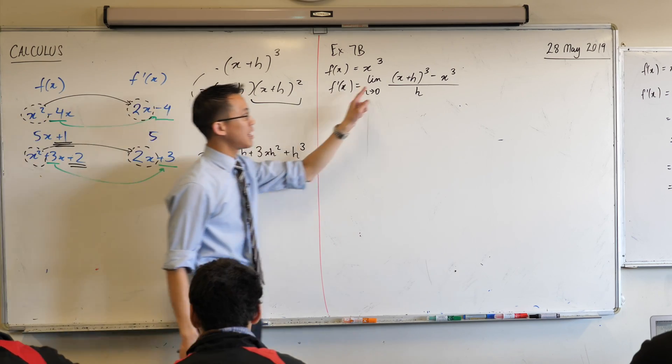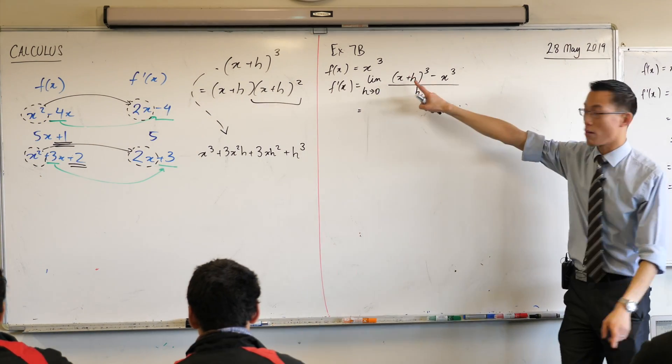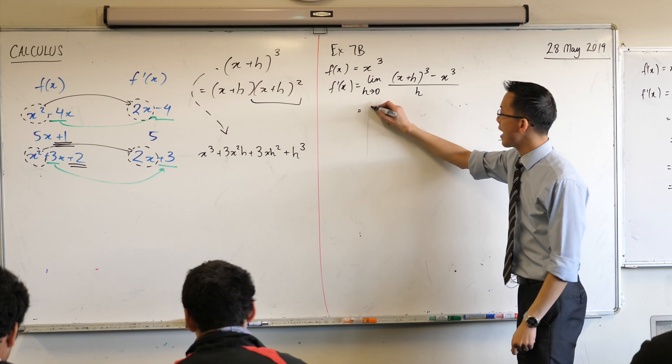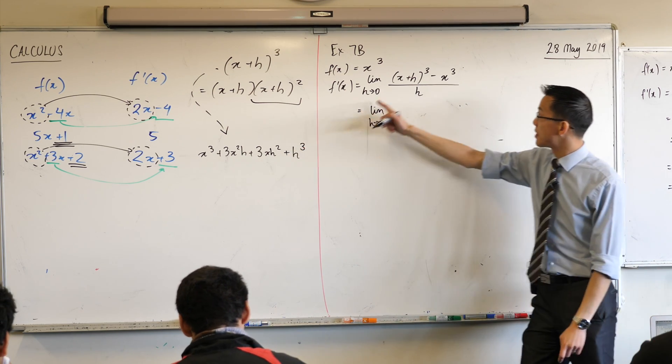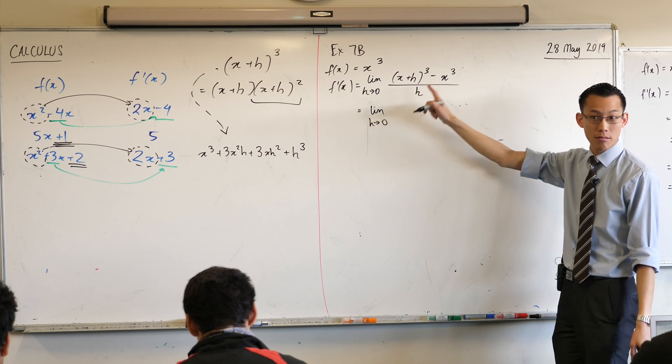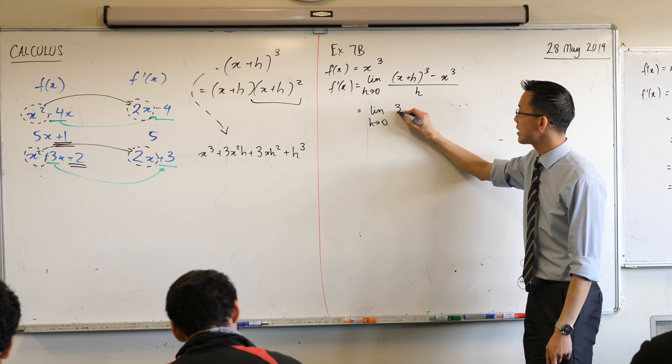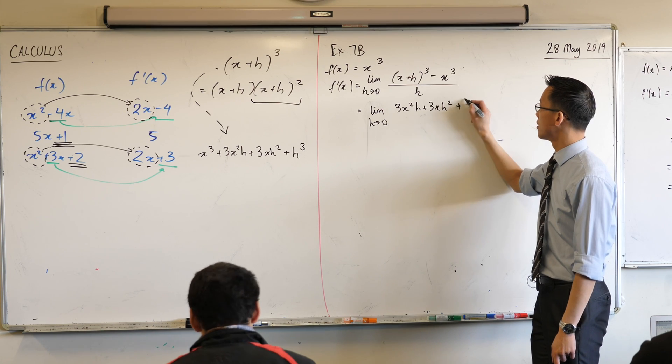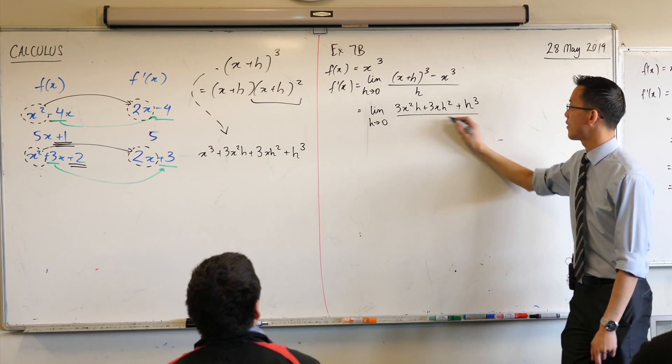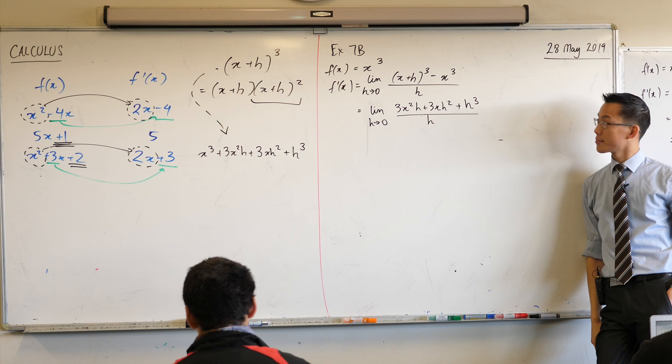So this represents f of x plus h, right there. So when you go ahead and you start to simplify, here's my limit out the front, it'll be that thing, but then you take away x cubed. Do you see that? There's my take away x cubed. So I just get left with this. Okay, this is what I get left with and then I'm dividing through by h.